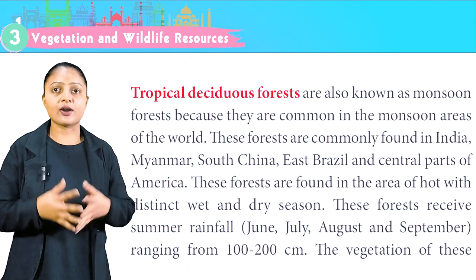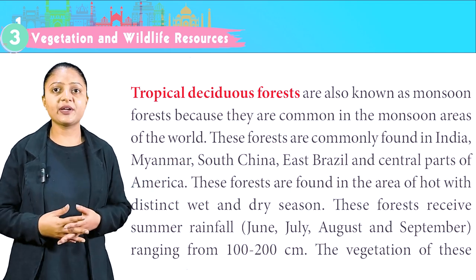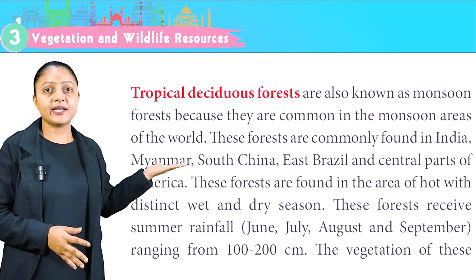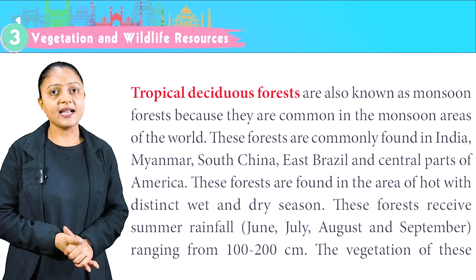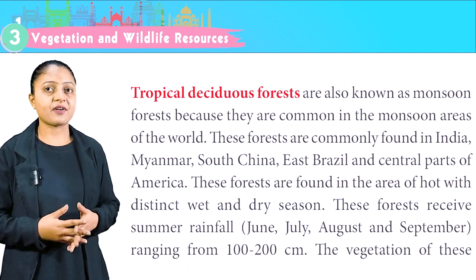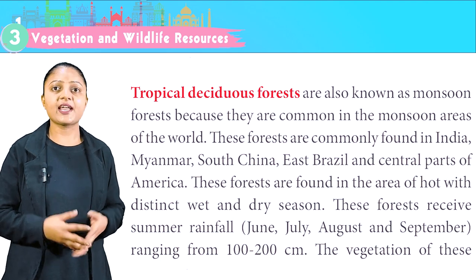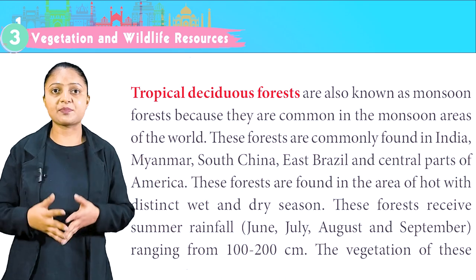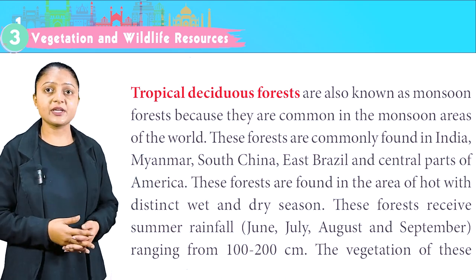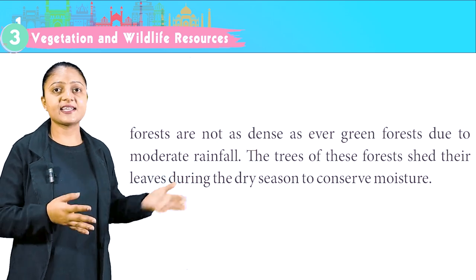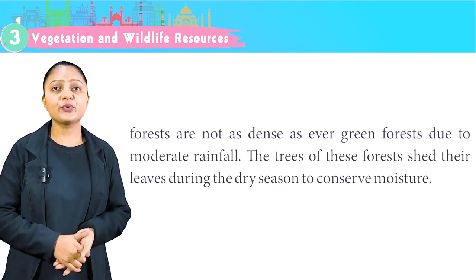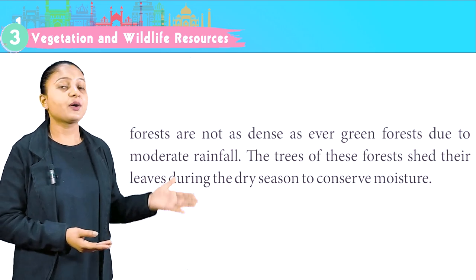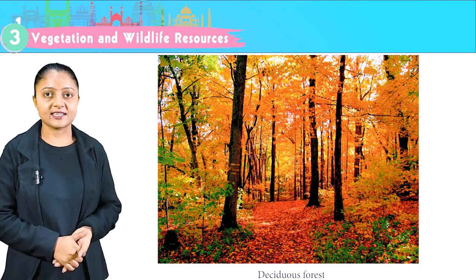Tropical deciduous forests are also known as monsoon forests because they are common in the monsoon areas of the world. These forests are commonly found in India, Myanmar, South China, East Brazil and central parts of America. They are found in areas of hot climate with distinct wet and dry seasons, receiving summer rainfall from June to September ranging from 100 to 200 cm. The vegetation is not as dense as evergreen forests due to moderate rainfall. The trees shed their leaves during the dry season to conserve moisture.